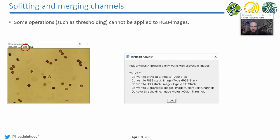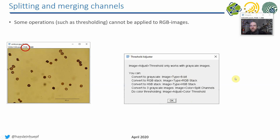Some operations, like thresholding, do not work on RGB images. When you open an image that is RGB — neither 8-bit, 16-bit, nor 32-bit — and try to apply a threshold, an error message may pop up. In this particular case, the error message already tells you what to do: you should convert your RGB image to an 8-bit image before applying a threshold.